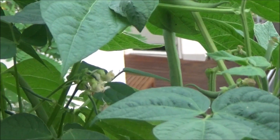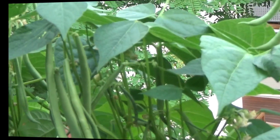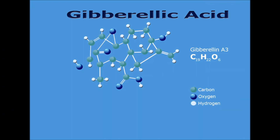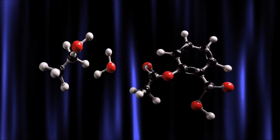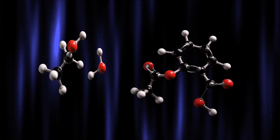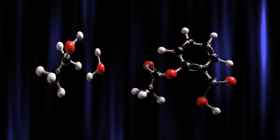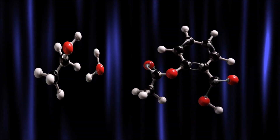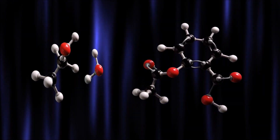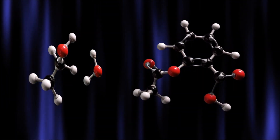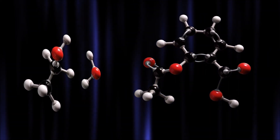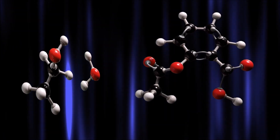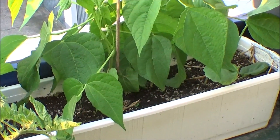Gibberellins are one of the longest known classes of plant growth hormones that regulate various developmental processes, including stem elongation, germination, dormancy, flowering, flower development, and leaf and fruit sequence. The highest concentration of gibberellic acid is found in developing peach seeds. Other plant sources include onion bulbs, spinach, and ferns, and there are at least 136 different naturally occurring gibberellic acid compounds that have been isolated from plants, ferns, and bacteria.